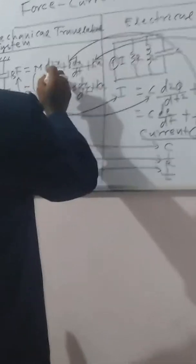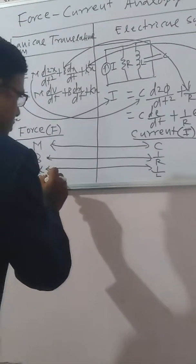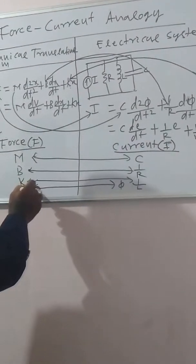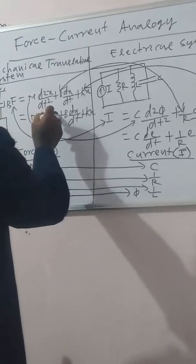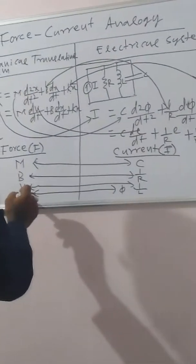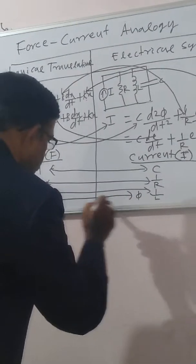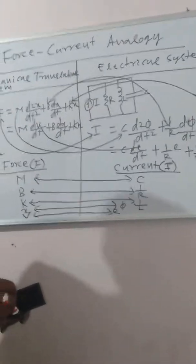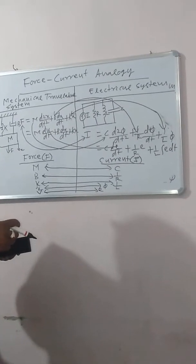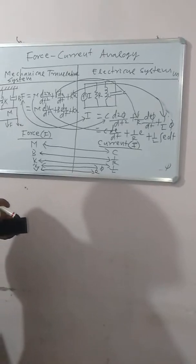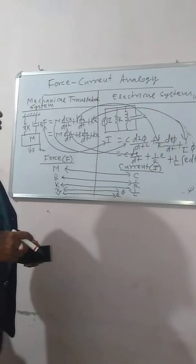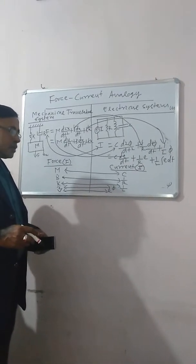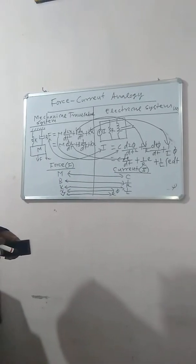Similarly, displacement X is analogous to flux linkage φ, and velocity V is analogous to voltage E. Thank you very much for watching this video. I think you have clearly understood the force current analogy and can easily remember it. In my next lecture, I will start the analogy between different elements. Thank you very much.